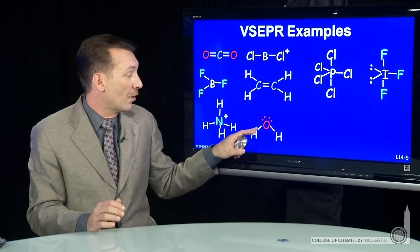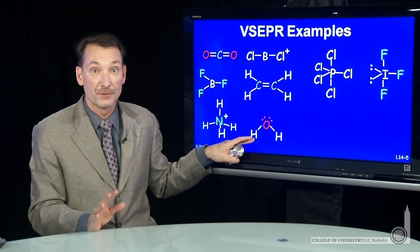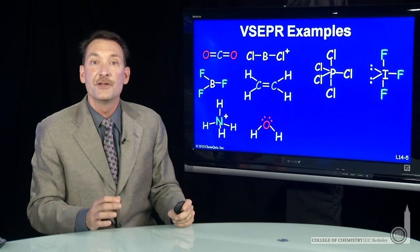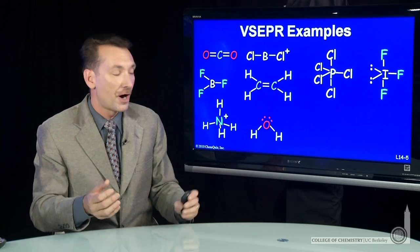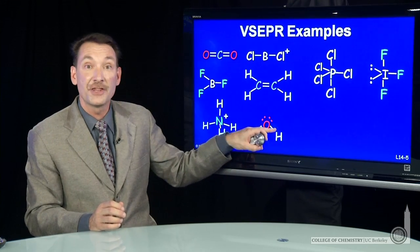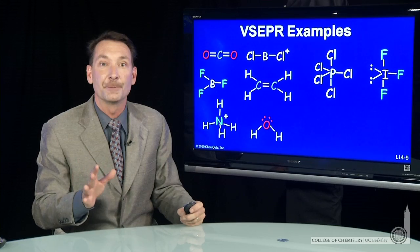The reason is we only talk about the atomic centers when we're naming the shape of the molecule. This molecule is bent. These lone pairs don't factor in to our structure of the molecule. They influence it, but when we name the structure, we just call that bent, referring only to the atoms.